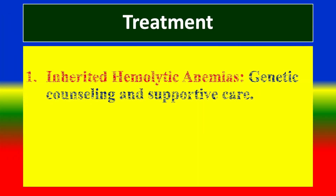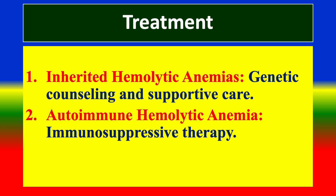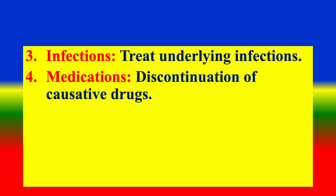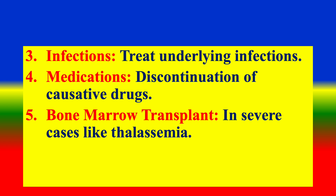Treatment: (1) Inherited hemolytic anemia — genetic counseling and supportive care. (2) Autoimmune hemolytic anemia — immunosuppressive therapy. (3) Infections — treat underlying infections. (4) Medications — discontinuation of causative drugs. (5) Bone marrow transplant — treatment in severe cases like thalassemia.